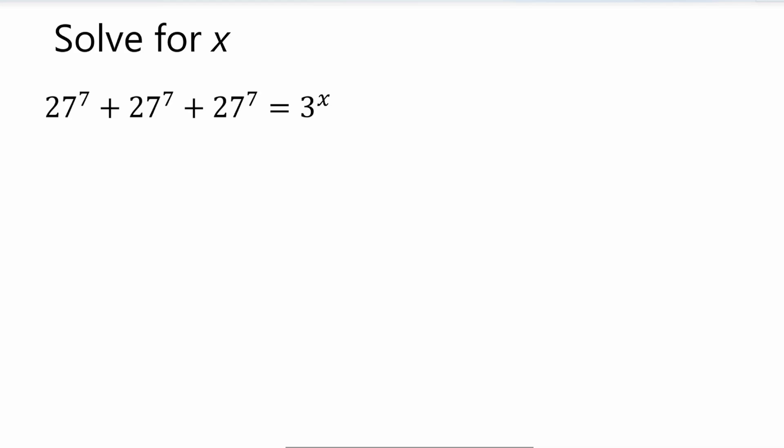Alright, so the problem is 27 to the power of 7 plus 27 to the power of 7 plus 27 to the power of 7 is equal to 3 to the x. And we want to solve for x.